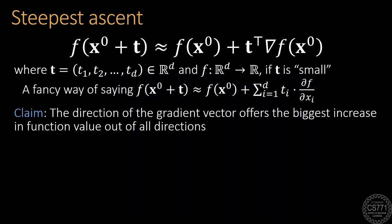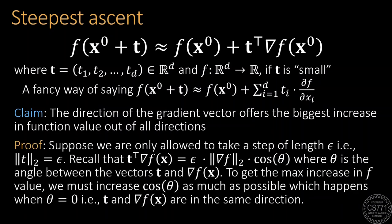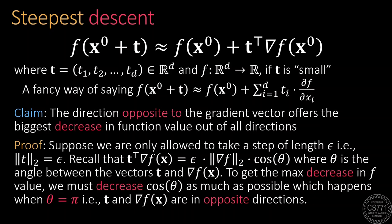Now, it turns out that the gradient has this amazing property in that it gives us the direction in which taking a small step will increase the function value more than if we took an epsilon step along any other direction. This proof simply uses certain properties of the dot product that we saw in our previous discussion on geometry basics, and I would encourage you to try and prove this result yourself. What is even more pleasing is that the direction opposite to the gradient can be similarly shown to be the direction along which taking a small step is guaranteed to decrease the function value the most.